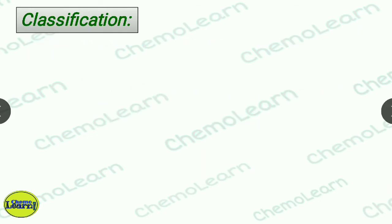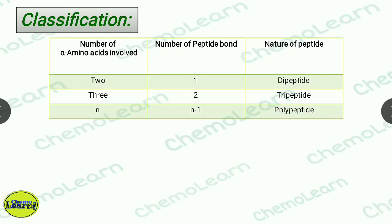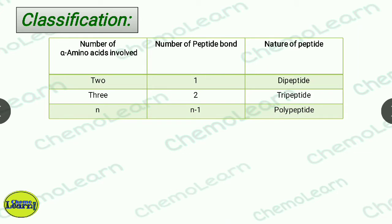Classification: if there are two amino acids involved in a peptide, then one peptide bond is formed and we call it a dipeptide. If there are three amino acids involved, then two peptide bonds are formed and it is a tripeptide. Likewise, tetrapeptide, pentapeptide, etc. When N number of amino acids are involved, then N-1 number of peptide bonds are formed.